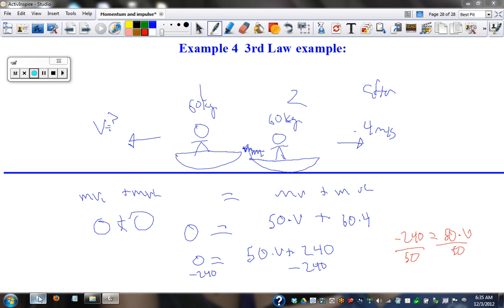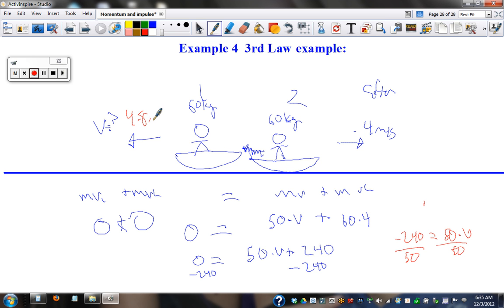And now we have negative 240 equals 50 times the velocity, divided by 50. 240 divided by 50 is 4.8. This one's 4.8 meters per second. So because we started with zero, we set it to zero and then just solved. That should be enough.